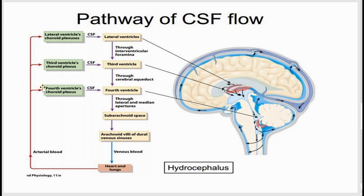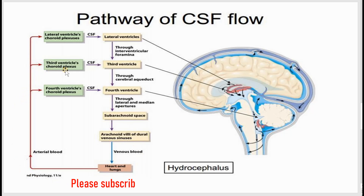Let's review CSF pathways. The choroid plexus in the lateral ventricles produce CSF. From the lateral ventricle it flows to the third ventricle through the interventricular foramina, then to the fourth ventricle through the cerebral aqueduct, and from the fourth ventricle into the subarachnoid space through the lateral and median apertures. In the subarachnoid space, arachnoid villae absorb the CSF into venous circulation, which goes into systemic circulation back to the arterial blood, returning to the choroid plexus where CSF is produced again.